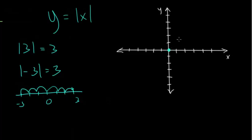When we plug in one, the absolute value of one is one. The absolute value of two is two. The absolute value of three is three, and so on — it's going to go up in a straight line. But for the negatives, every time you plug in a negative, it's going to become positive. So the absolute value of negative one is one, the absolute value of negative two is positive two, and the absolute value of negative three is three.